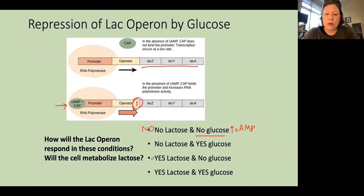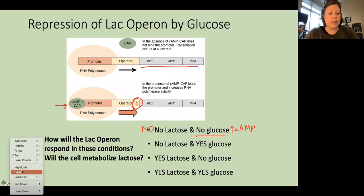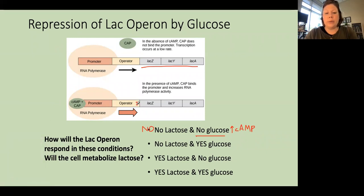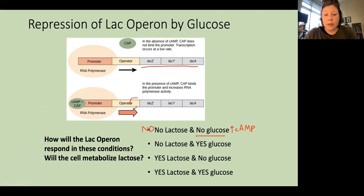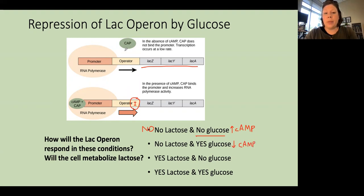If we have no lactose around but yes glucose, we're still going to have the lac repressor sitting on the promoter. Because there is glucose around, we're going to have low cyclic AMP levels. So we'd be in the situation where the CAP protein isn't bound to the promoter at all, and also the repressor inhibitor is in place. So we're definitely not going to have transcription of the lac operon under these conditions.